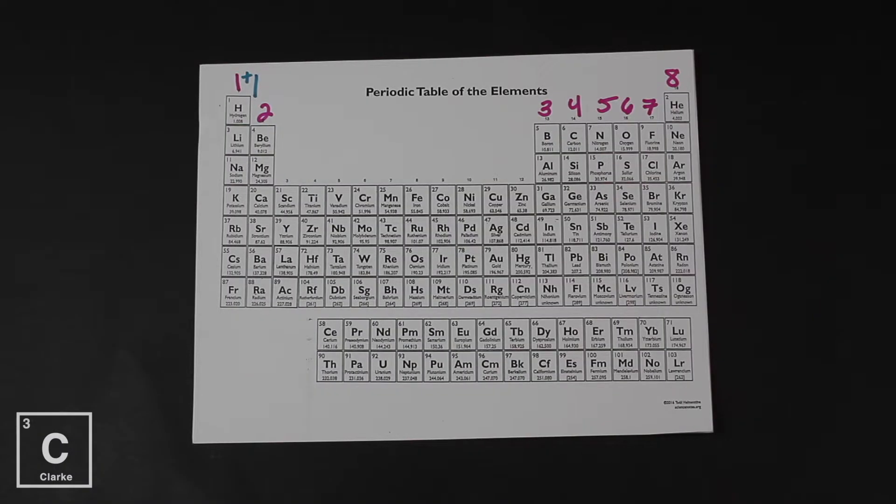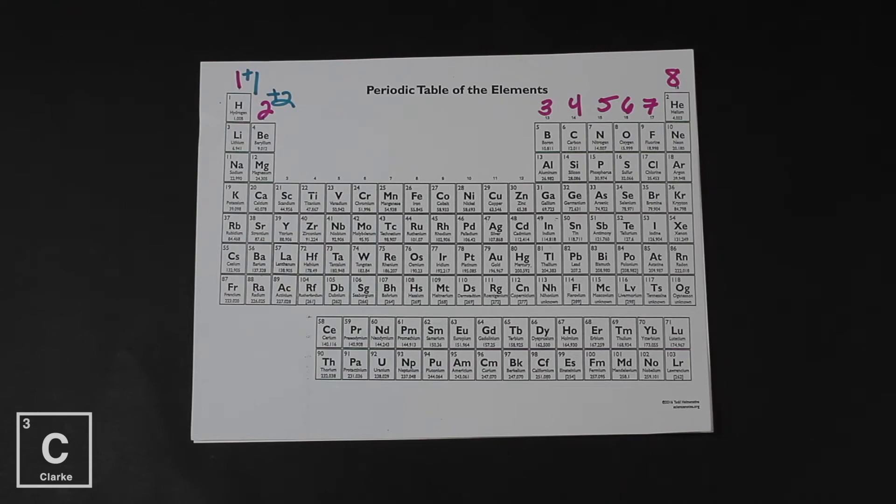Alkali metals are going to be much happier losing that electron. So when elements in group one become an ion, they become a plus one ion. Let's label that on the periodic table — everything in group one is a plus one cation. Group two elements have two valence electrons. We're trying to get eight, so they could either lose two or gain six. Nature always goes the path of least resistance — it takes less energy to lose the two. So every element in group two becomes a plus two cation. Label that on your periodic table.